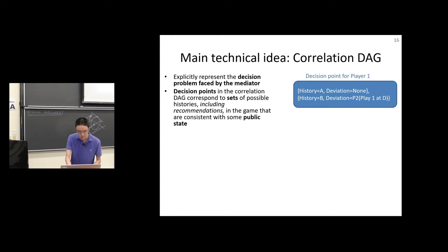We're breaking down the game into observations that are public and private. The mediator observes what is public. Conditioned on that public information, the mediator puts together the set of possible true histories, including recommendations that could have happened up to that point. Here's a possible decision point at a node. Let's say it's player one's turn. There are two possible things in this decision point. The first is that the history could be A and nobody has deviated. The second possibility is that the history is B, but player two has already deviated somewhere.